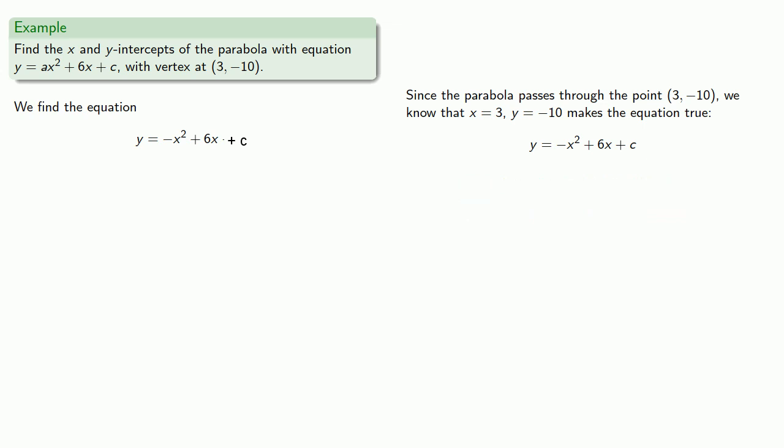And we can use this to find our value of c. So equals means replaceable, so we'll replace x with 3 and y with -10 and solve for c, which gives us our equation y = -x² + 6x - 19.